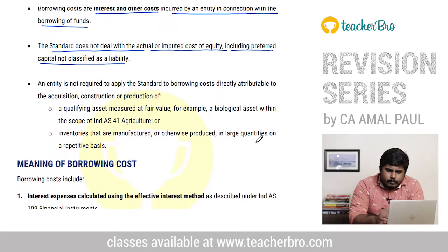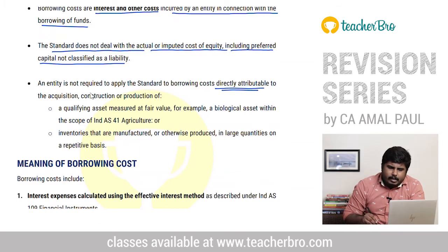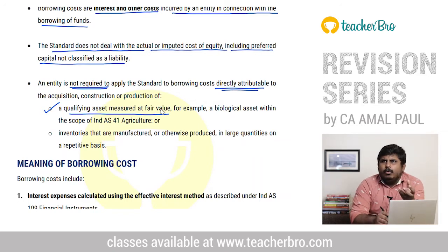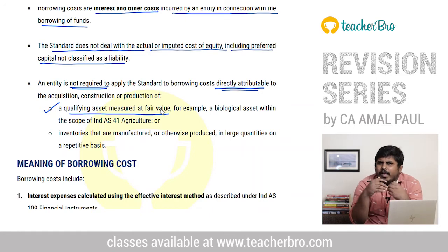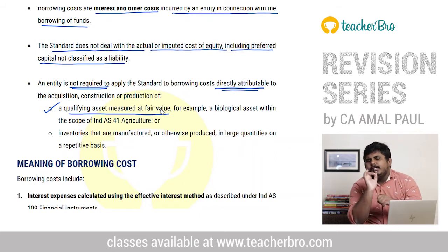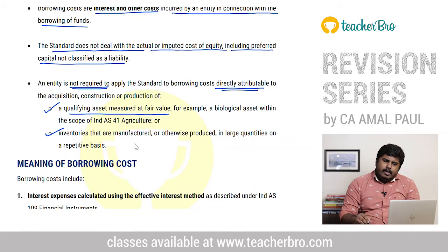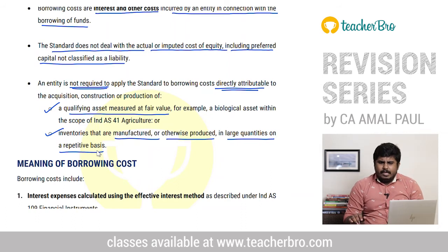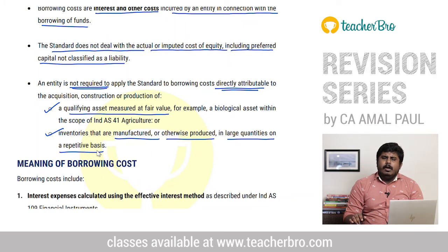In this case, we have to apply Ind AS. However, there are exceptions: a qualifying asset measured at fair value, a biological asset, or a situation where the asset is measured at fair value less cost to sell. Also, inventories that are manufactured or otherwise produced in large quantities on a repetitive basis — the standard requirement does not apply to those.